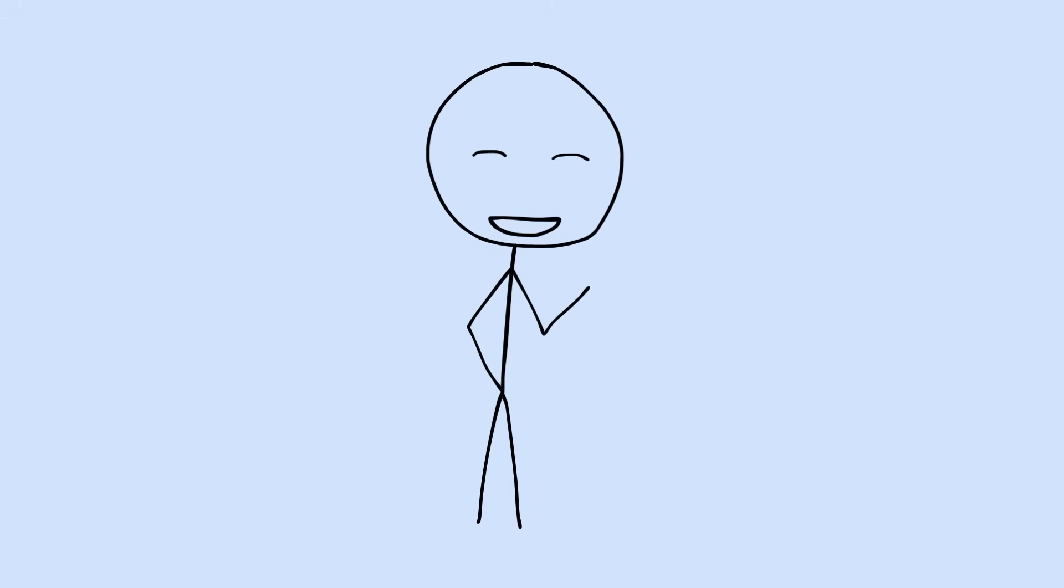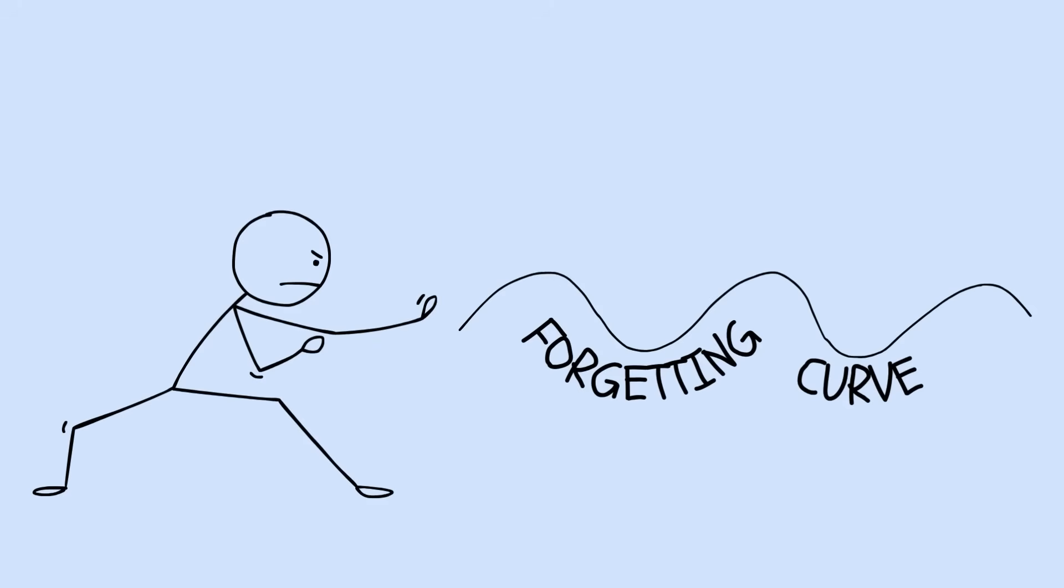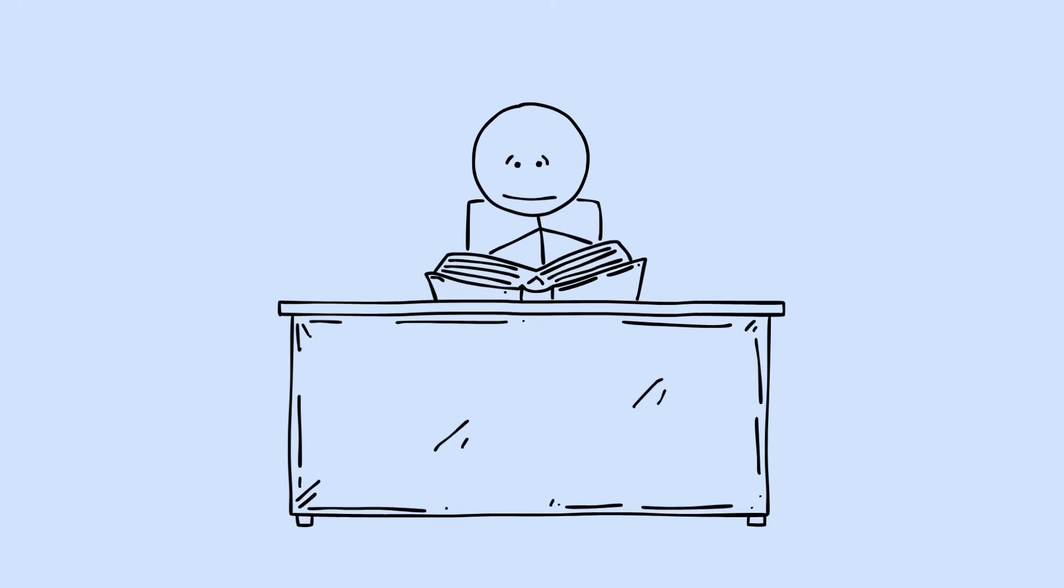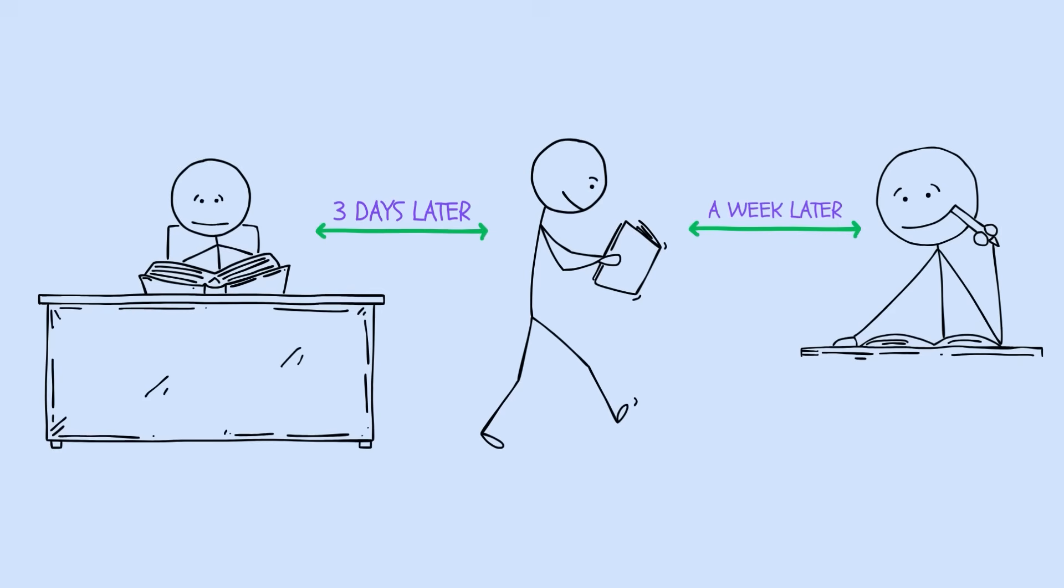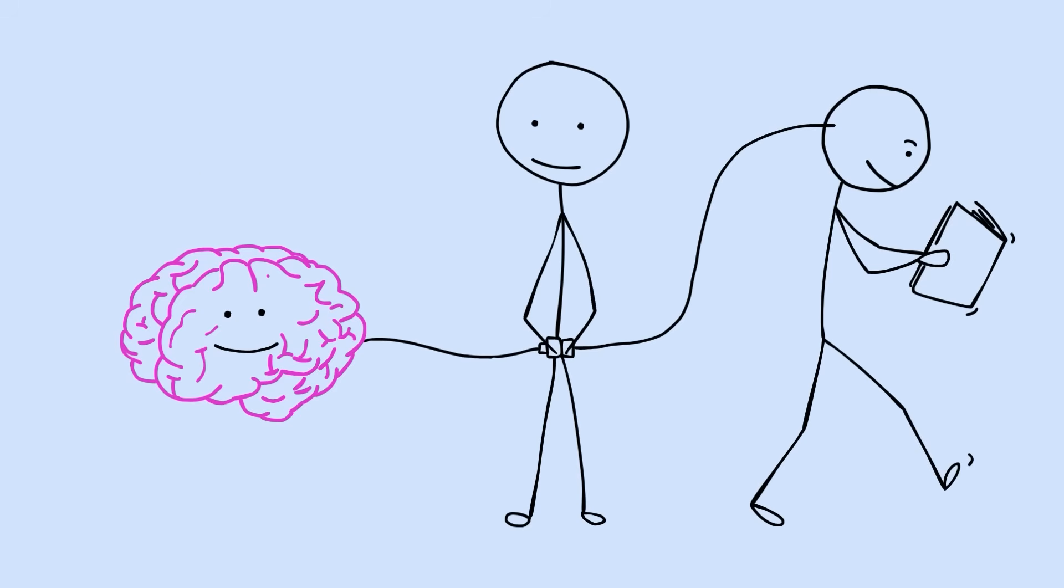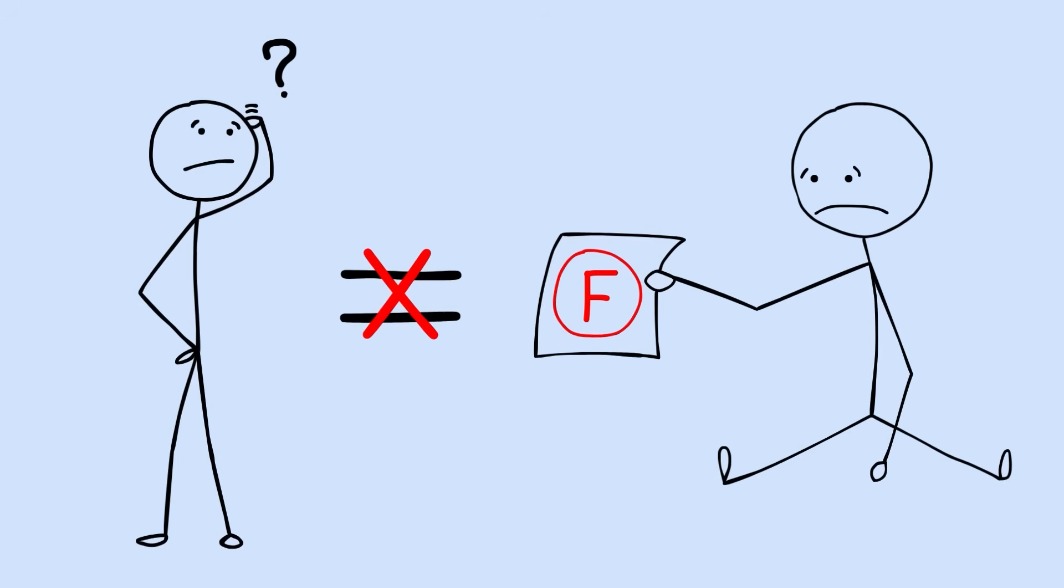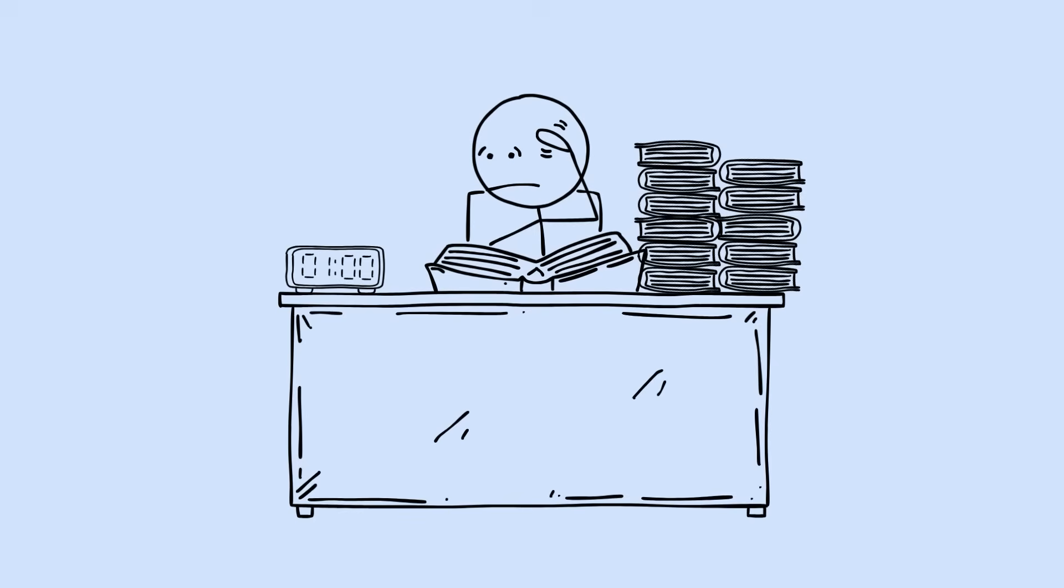Here's exactly what to do. Fight back at exactly the right moments. Review within 24 hours, then again in three days, then a week later. This rewires how you think. You're not forgetting because you're not smart enough. You're forgetting because you're not timing it right.